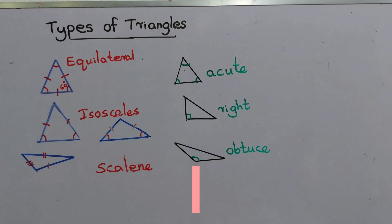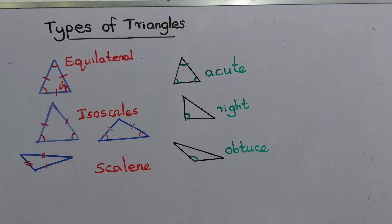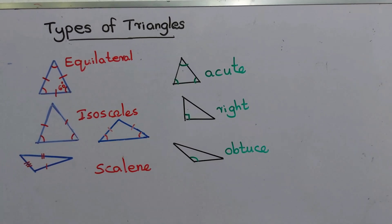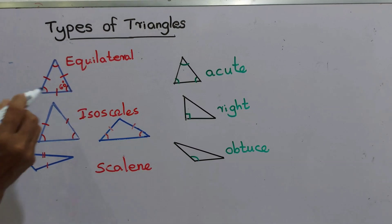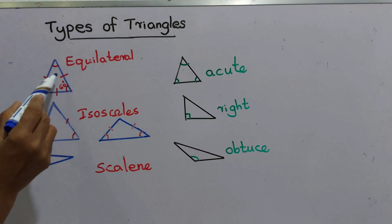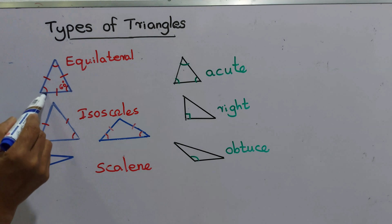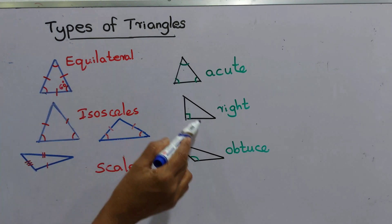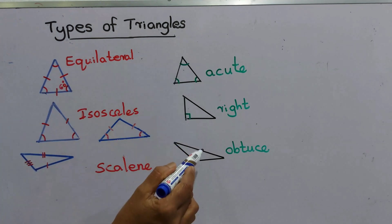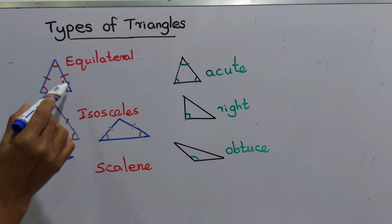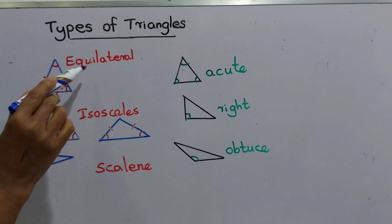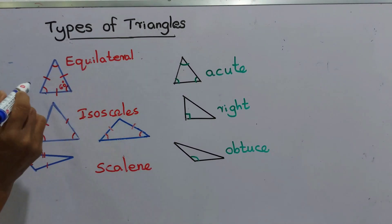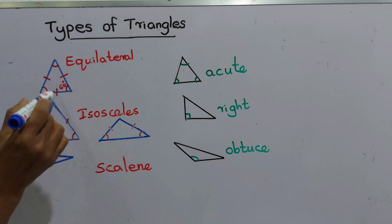Today we are going to discuss types of triangles. We can separate and name triangles according to their sides and their angles. Now see this triangle — we name this as an equilateral triangle, which means all the sides are equal.